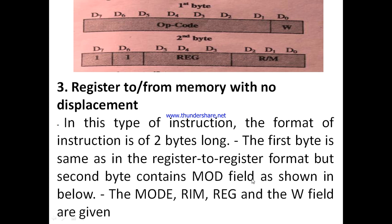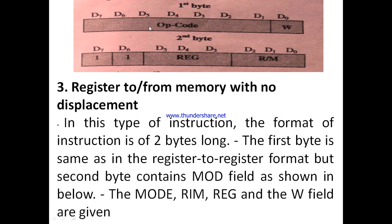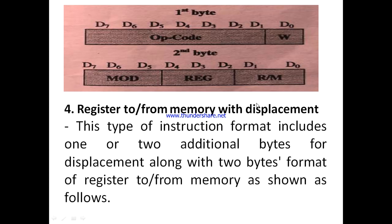The second byte contains additional fields. The mode field is included — indicating whether the processor is in maximum or minimum mode — along with the register field and the R/M field. So the first byte has the operation code and width, and the second byte has the mode, register, and R/M fields.